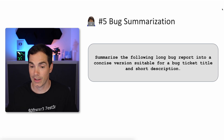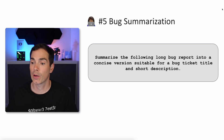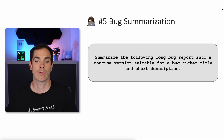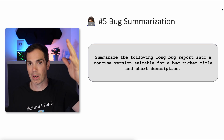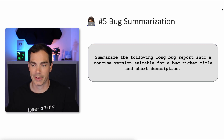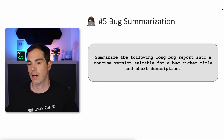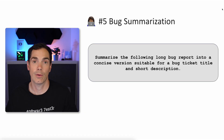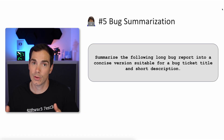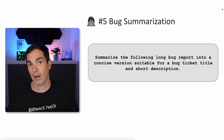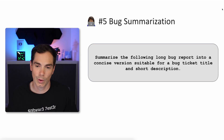Prompt five: bug summarization. Summarize the following long bug report into a concise version suitable for a bug ticket title and short description. If you get a long bug report, just ask an LLM to summarize it and create a bug report ticket. In the best case, provide the LLM with a template of the bug report, and voilà — you have a bug report.